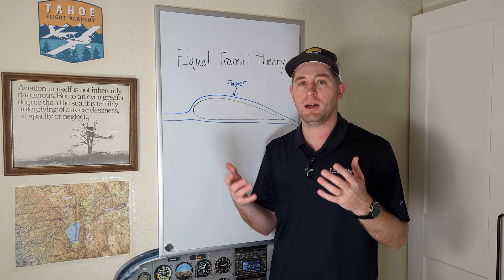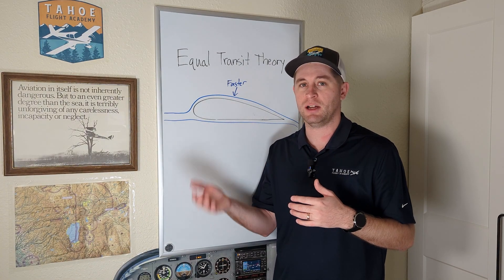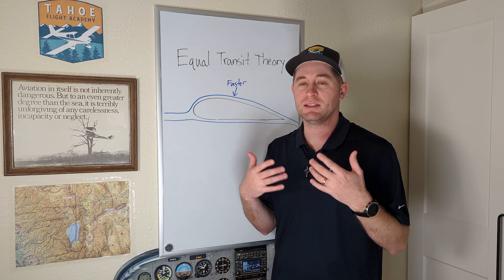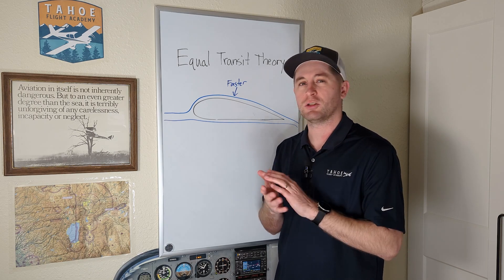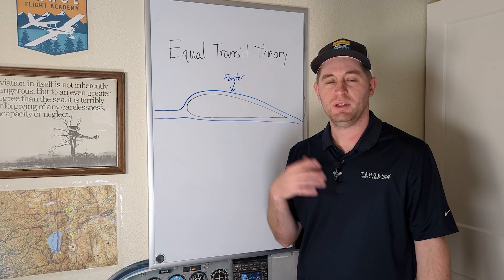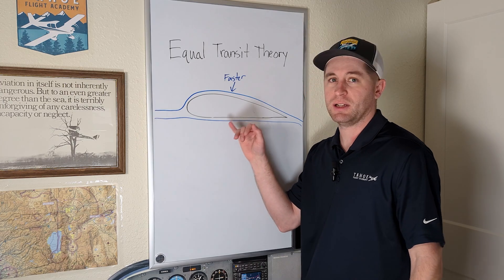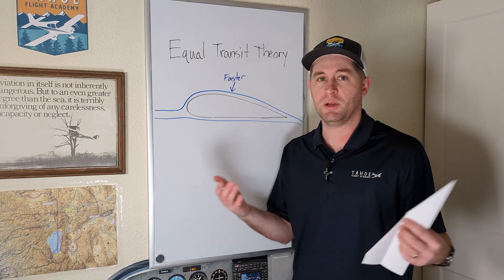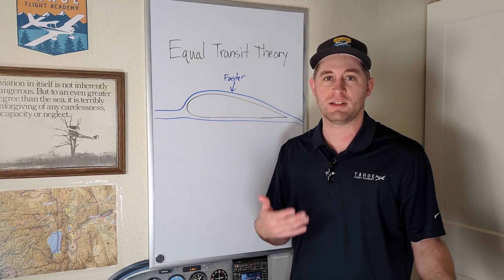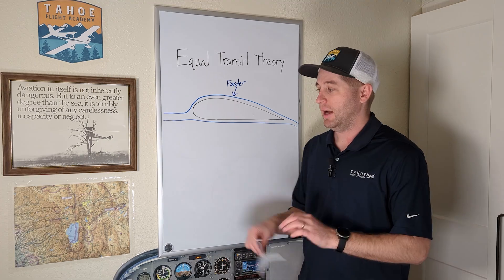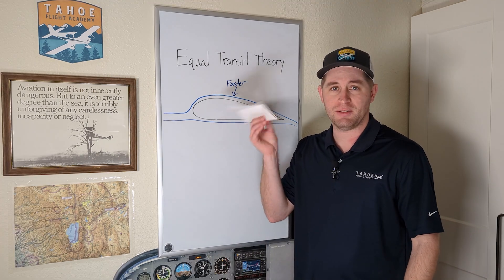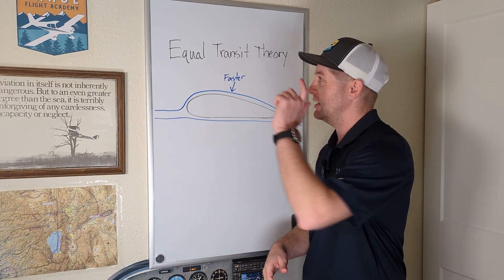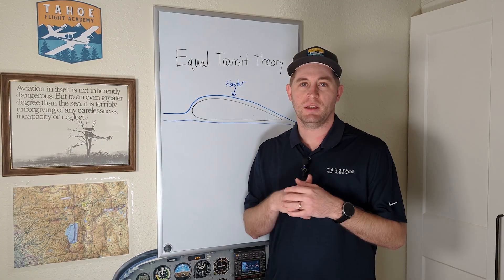Even though this is what's commonly taught by many flight instructors and ground schools, anybody with common sense can start to question it — because not all airplanes have wings shaped like this. So how do airplanes with symmetrical airfoils, like fighters and aerobatic airplanes, fly? How does this paper airplane fly? Well, the answer is because the equal transit theory is complete BS.